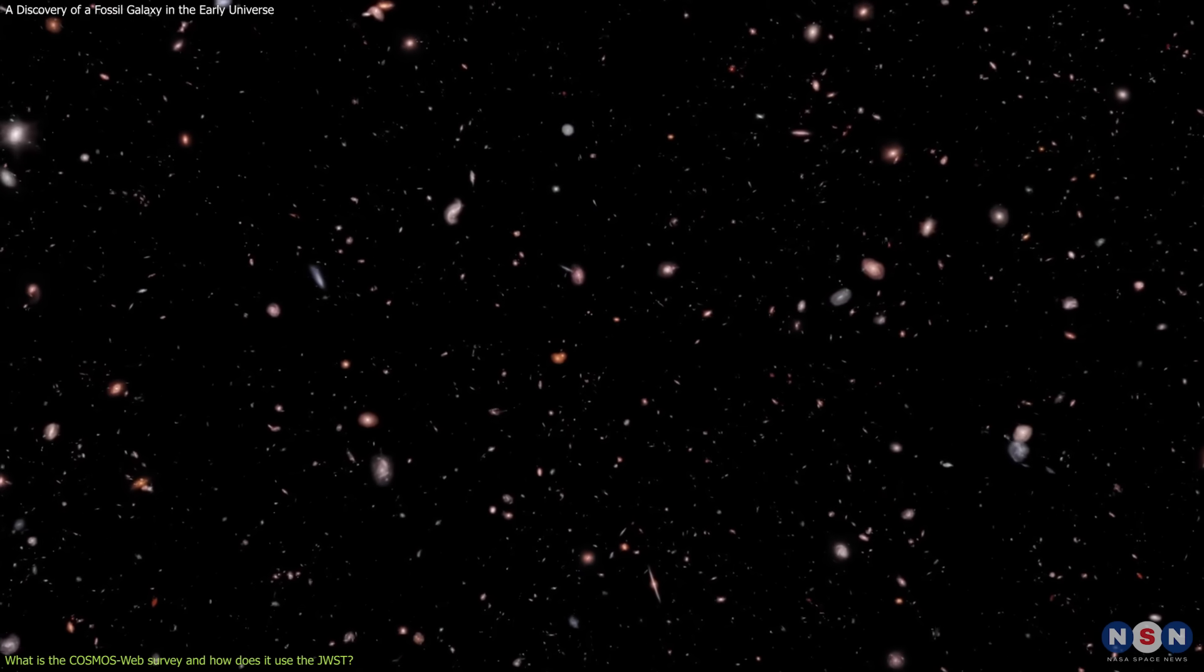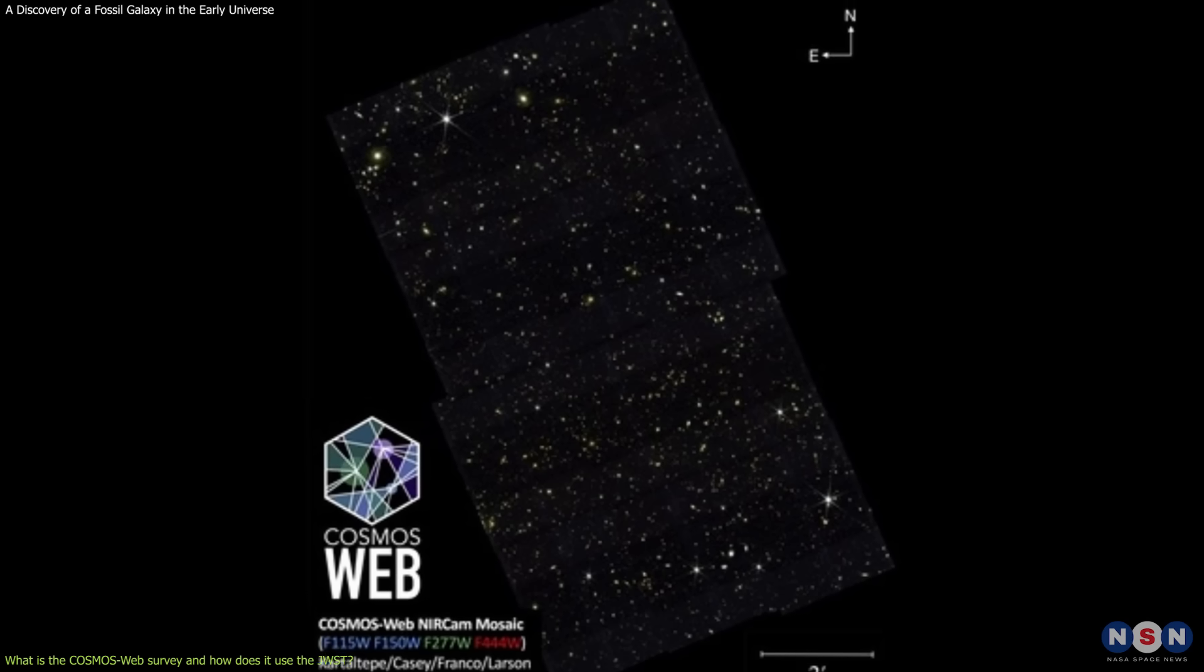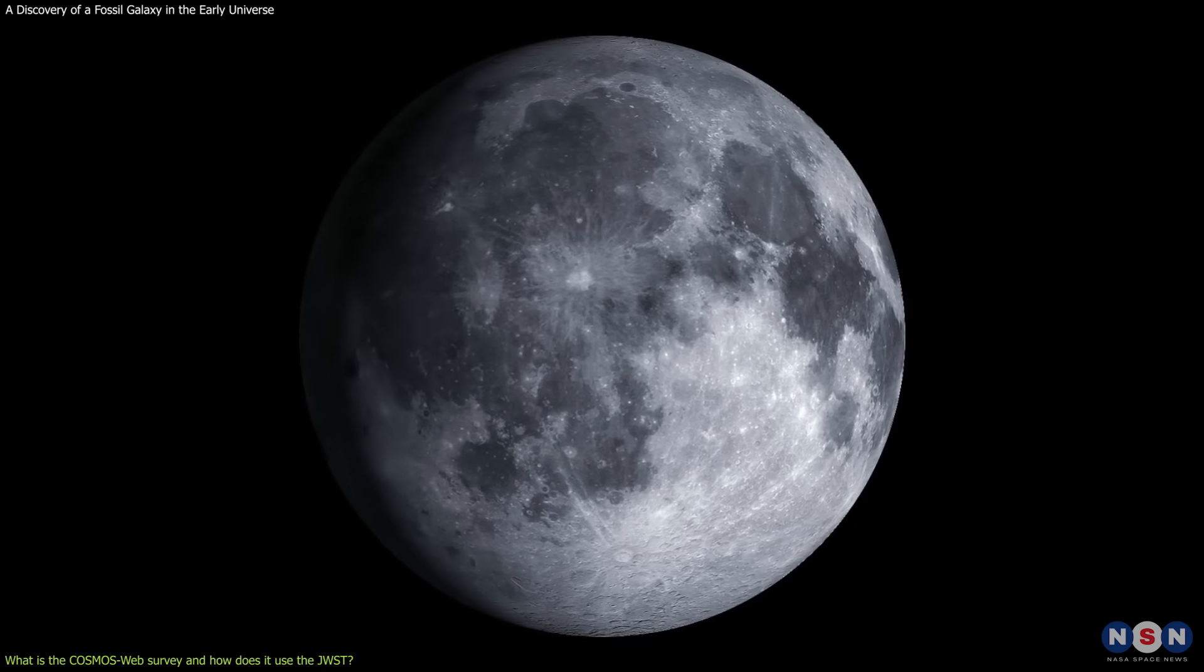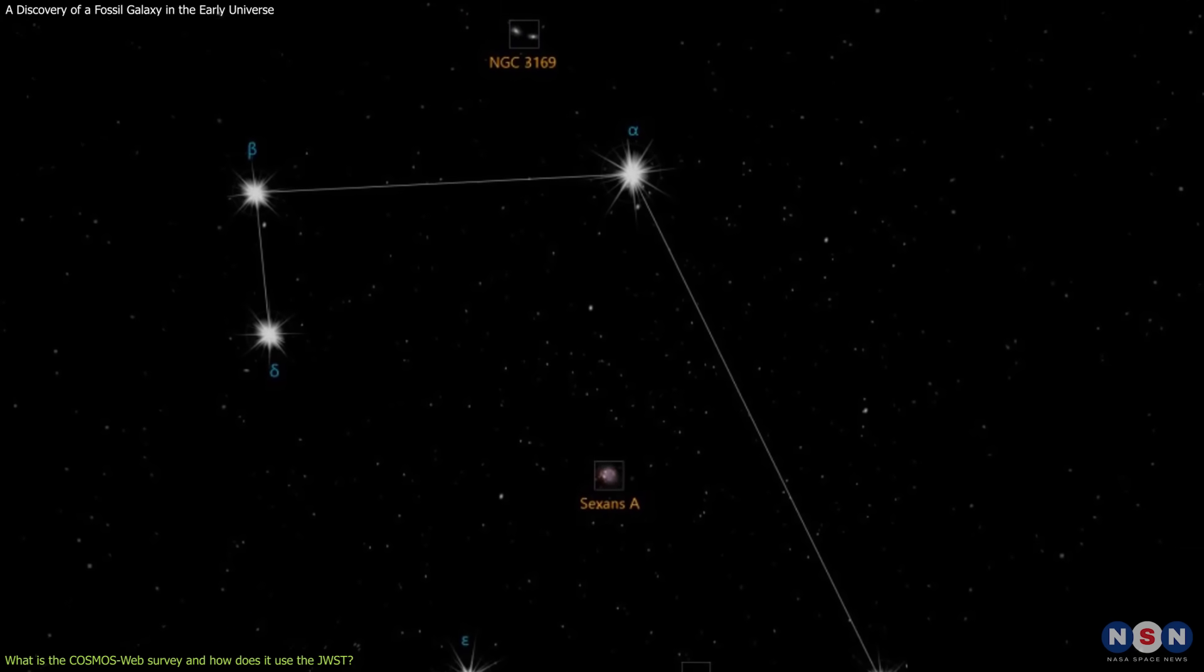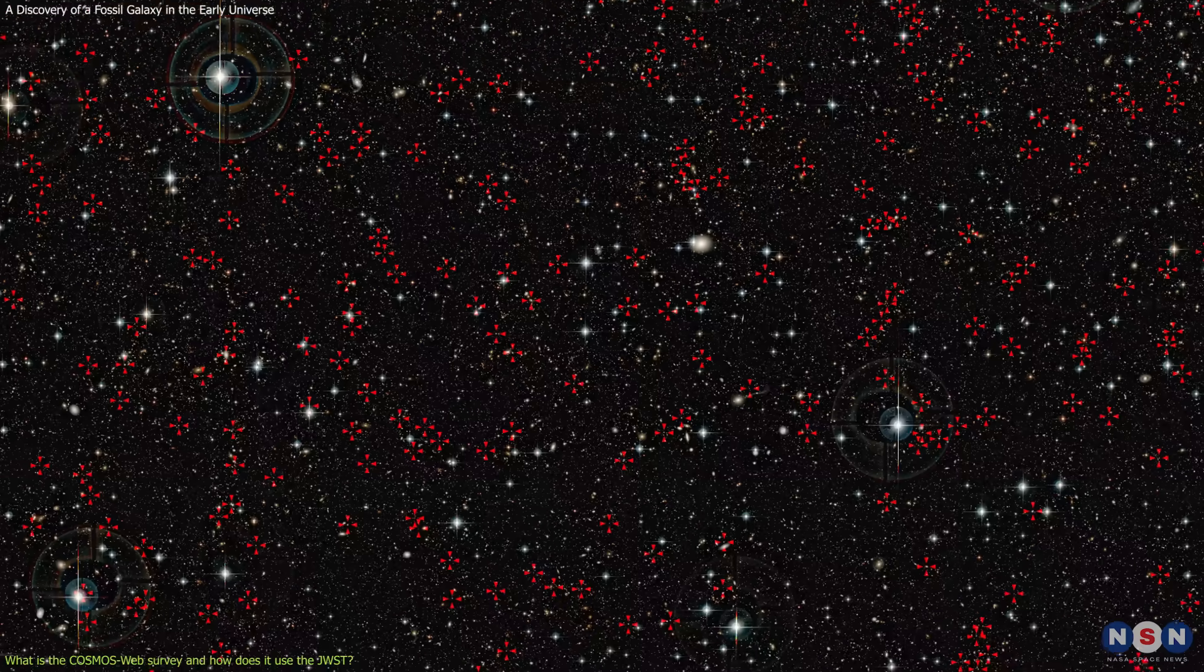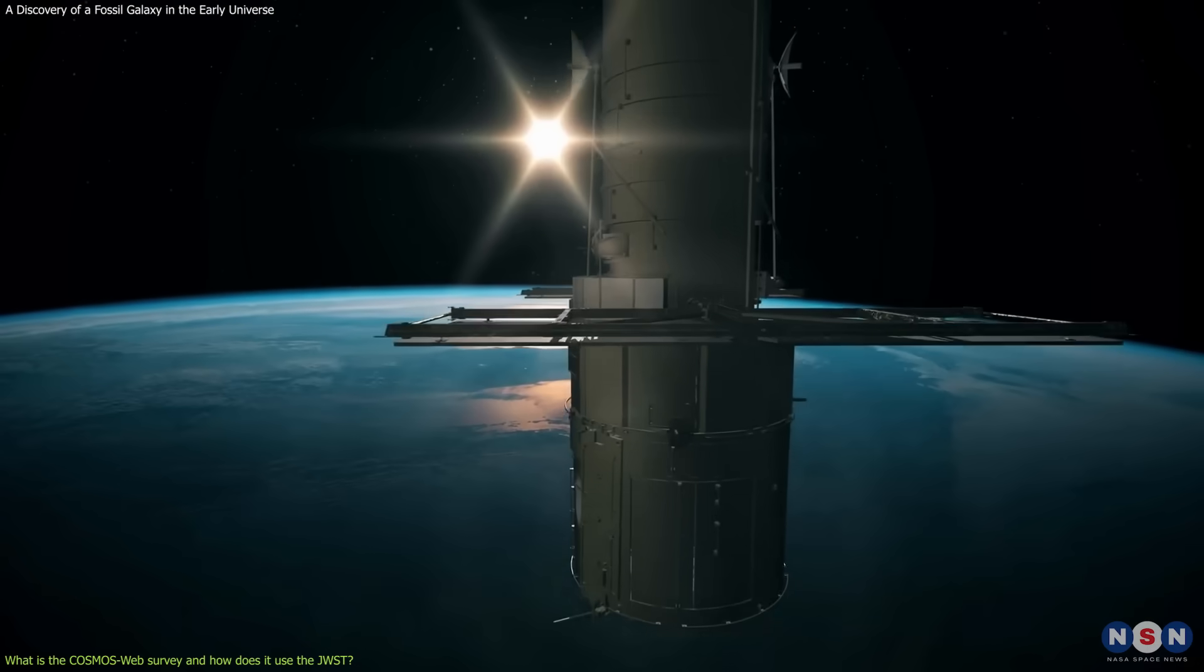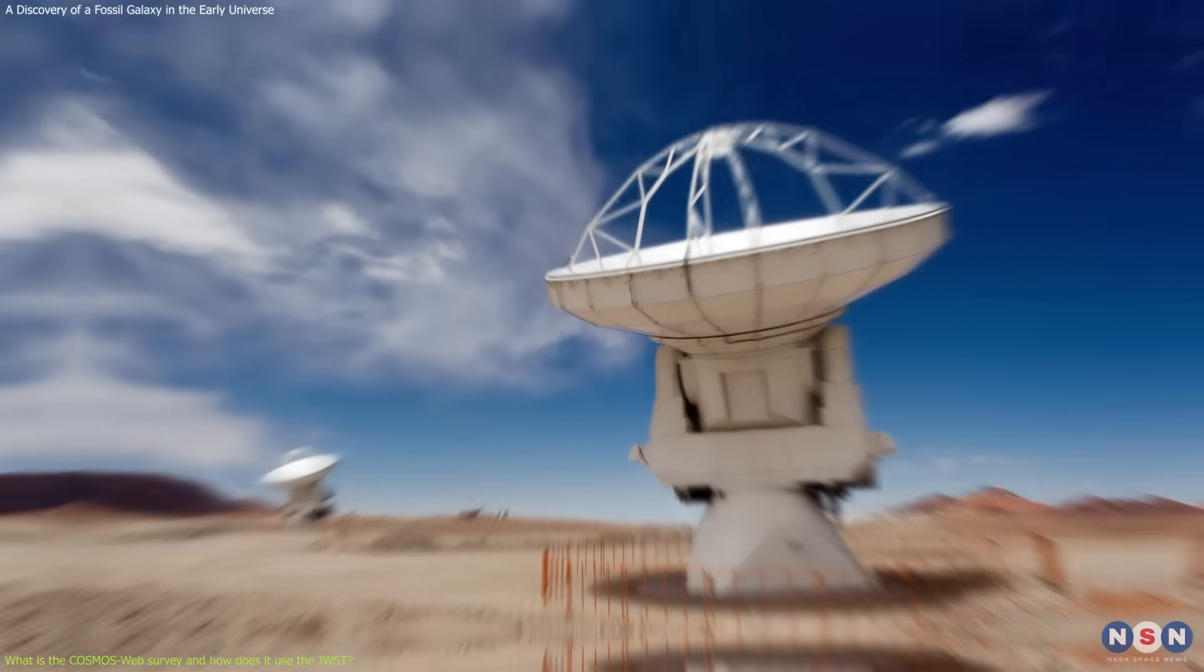The Cosmos Webb Survey uses the NERCAM to observe a large patch of the sky, about 2 square degrees in size, which is equivalent to about 10 times the area of the full moon. This patch of the sky is located in the constellation of Sextans, and it is part of the Cosmos field, which is one of the most extensively studied regions of the sky, with data from many other telescopes, such as Hubble, Spitzer, Herschel, and ALMA.